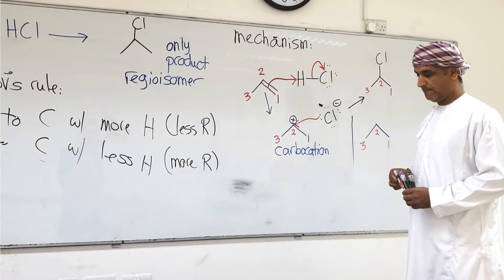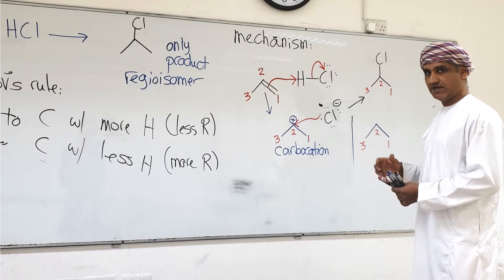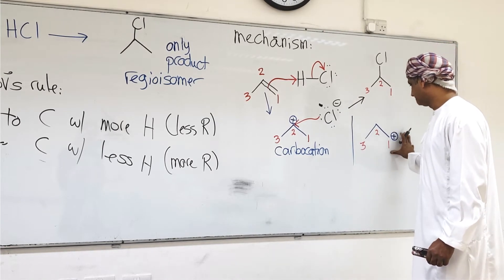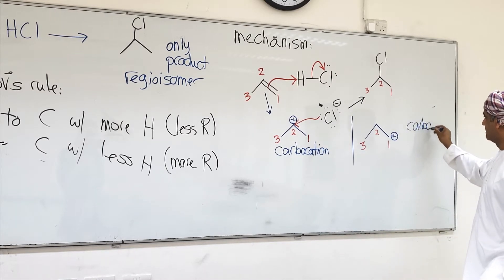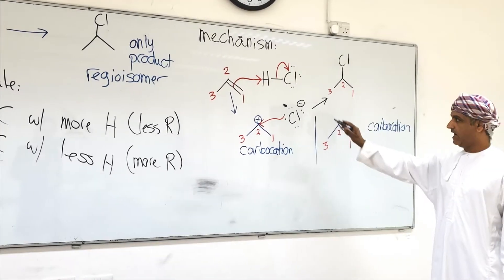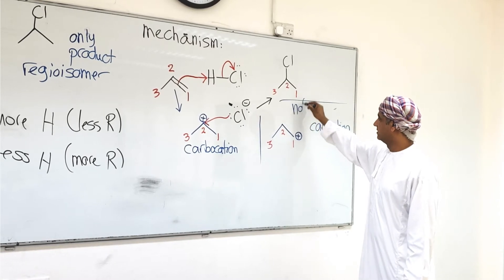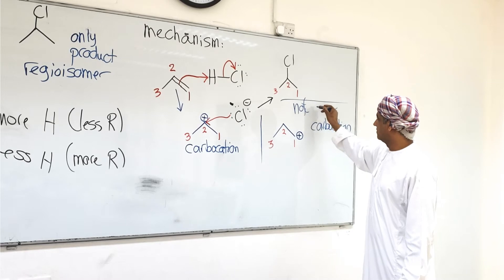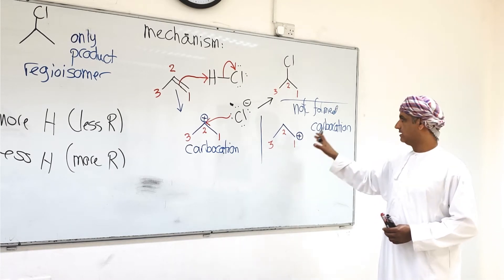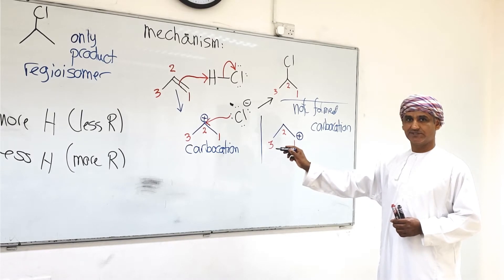In the carbocation formed by Markovnikov's rule, hydrogen bonds to carbon one and the positive charge is on carbon two. In the alternative isomeric carbocation, hydrogen bonds to carbon two and the positive charge would be on carbon one. This alternative carbocation is not formed, whereas the first carbocation is formed. The reason is their relative stability.